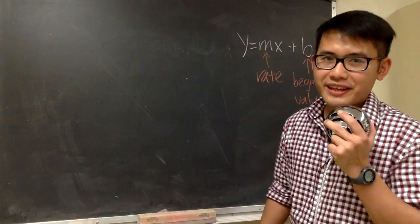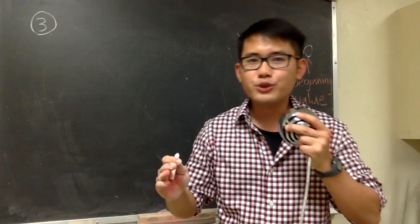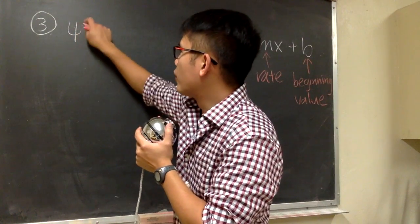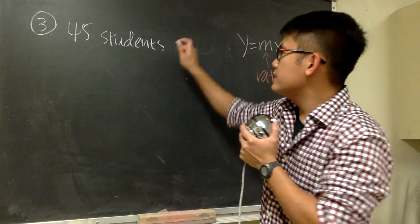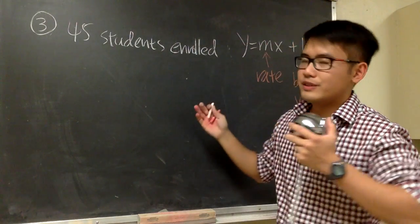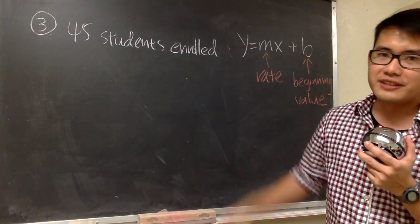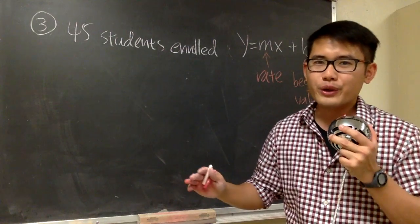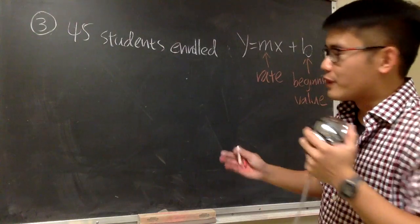So now let's look at another situation besides having a job. Suppose you just begin with your class and there were a total of 45 students including yourself. So 45 students enrolled in your math class or English class whatsoever. 45 students on the very first day. However, as you guys know, throughout the semester, you will get less and less students because students drop, right?